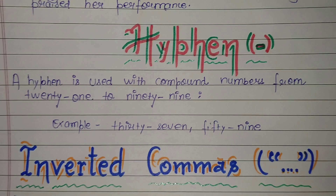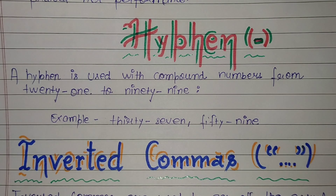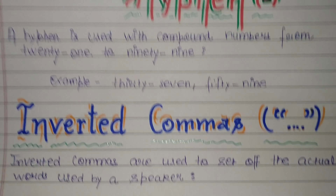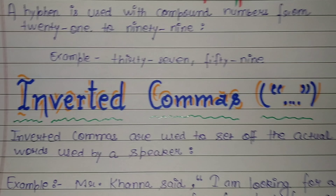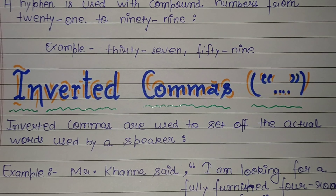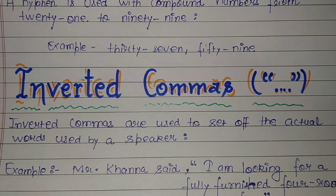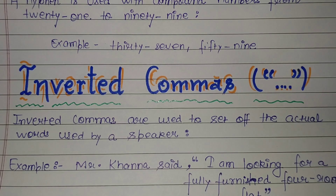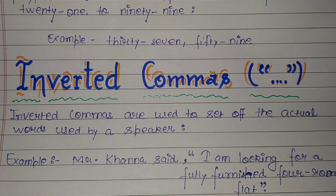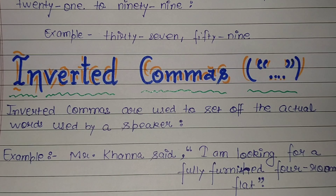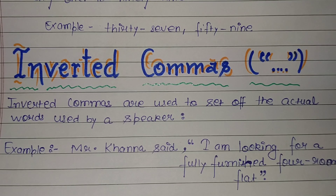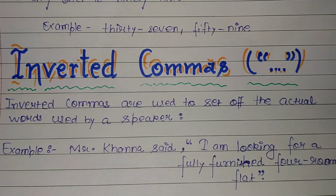Inverted commas are used to set off the actual words used by a speaker. Example: 'Mr. Khanna said, "I'm looking for a fully furnished four-room flat."'